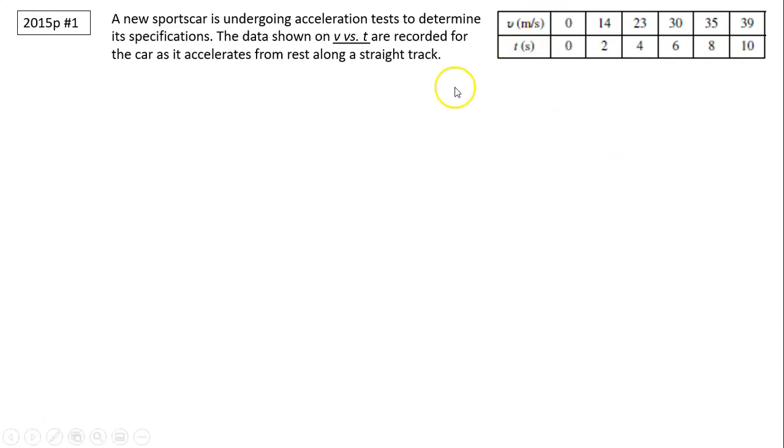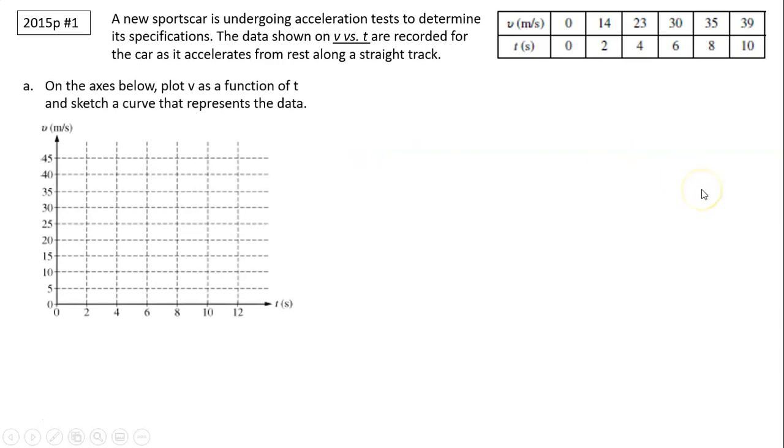So here is t and v. Part A: On the axis below plot v as a function of t and sketch a curve that represents the data. So first we have to plot the data as accurately as possible. Then you need to sketch a curve, a smooth curve, not connecting dots.